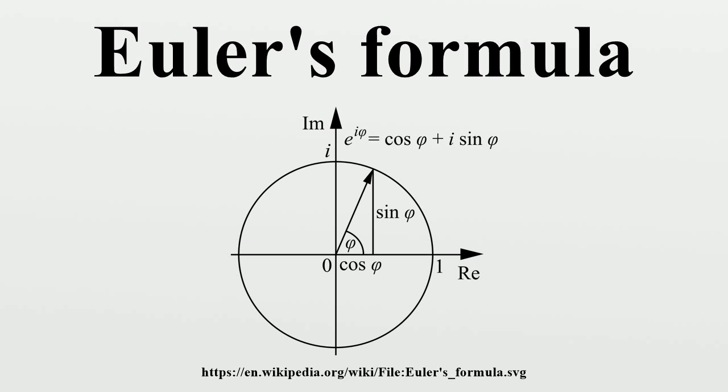Finally, the other exponential law, which can be seen to hold for all integers k, together with Euler's formula, implies several trigonometric identities as well as De Moivre's formula.